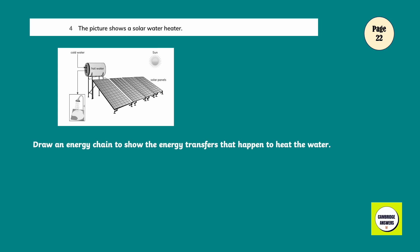A picture shows a solar water heater. Draw an energy chain to show the energy transfers that happen to heat the water. Sun, solar panels, water.